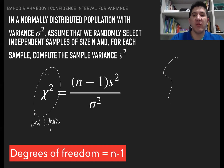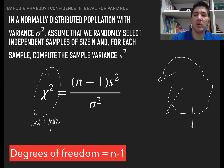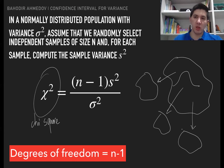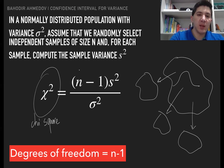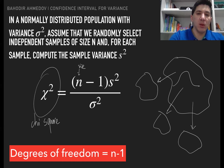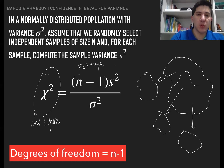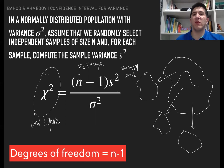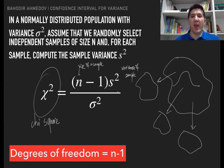What this tells you is that if you have a big population with a normal distribution, and you take lots of samples and calculate the standard deviation of the samples, then this quantity is going to have the chi-square distribution, where n is the size of the sample, s-squared is the variance of the sample, and sigma-squared is the variance of the population. This chi-square distribution, like the t-distribution, will have different shapes depending on the degrees of freedom or the sample size.